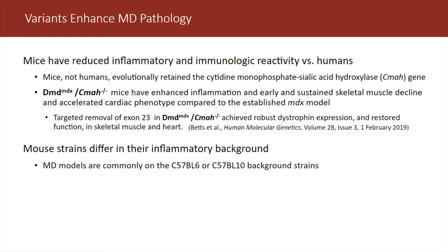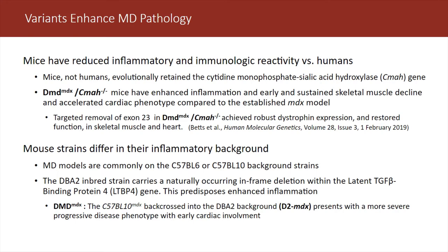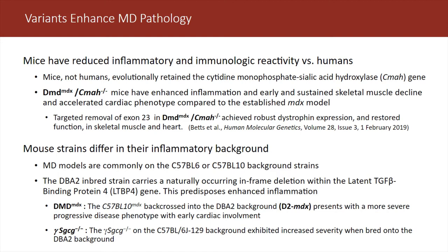Most muscular dystrophy models are on the C57 Black 6 or Black 10 background strains. The DBA model — an inbred mouse — carries a naturally occurring in-frame deletion, such that MDX mice back-crossed into the DBA background present with a more severe progressive disease phenotype and cardiac involvement. Other muscular dystrophy models such as gamma-sarcoglycan deficiency have also been shown to be enhanced when crossed into the DBA2 background.